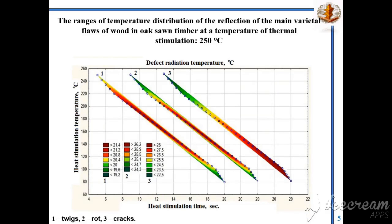The temperature ranges of infrared radiation of the defects are: for knots, -16 to 24; rot, 22 to 27; cracks, 24 to 31 degrees Celsius.